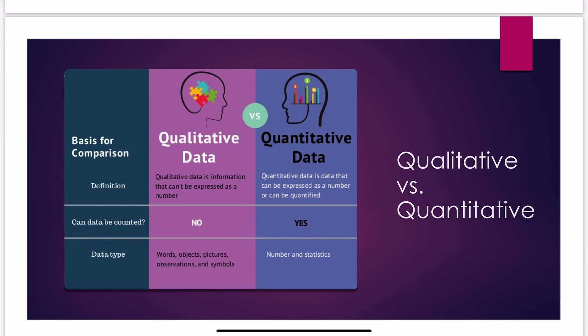Quantitative data is data that can be expressed as a numerical value — it's something we can count. How many particles do I have? How many grams went into the reaction and how many grams of a substance were produced? We still have conservation of mass — we cannot create nor destroy matter, but substances can be converted from one kind of species to another through chemical reactions.